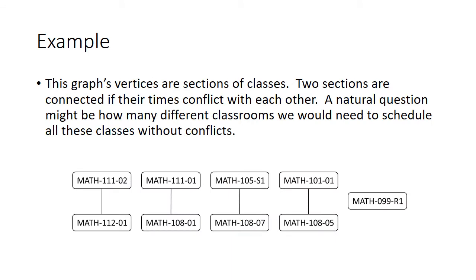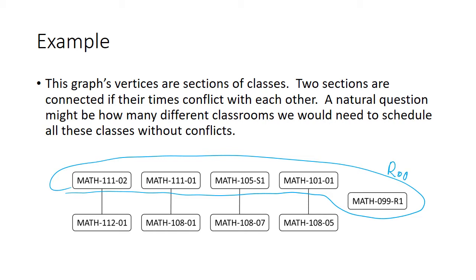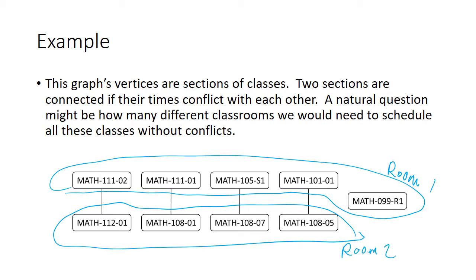Graphs are also really useful for scheduling problems. Here the vertices are sections of classes — specifically some fall 2020 100-level math classes — and two sections are connected if their times conflict. A natural question is how many different classrooms are needed to schedule all these classes without conflicts. You only need two classrooms: put one set in room one and another set in room two. For more complicated graphs, there are algorithms to figure this out.